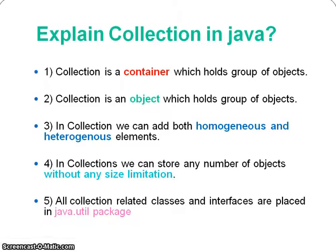We can also add homogeneous elements: if we take an Integer collection we can add only Integer type objects, and if we take a String collection it can add only String type elements. So we can add both homogeneous and heterogeneous elements. Fourth, we don't have any size limitation in a collection — we can store any number of objects without any size limitation.